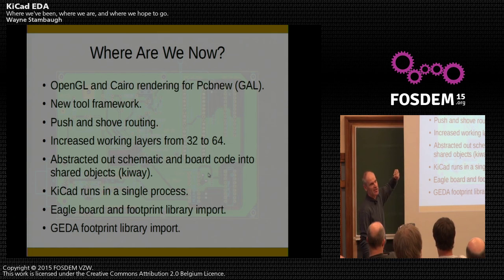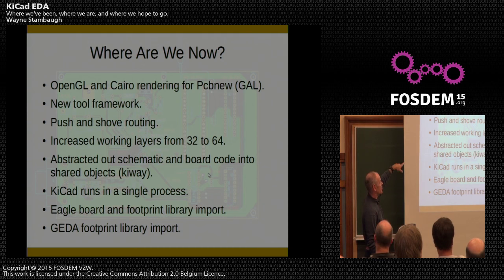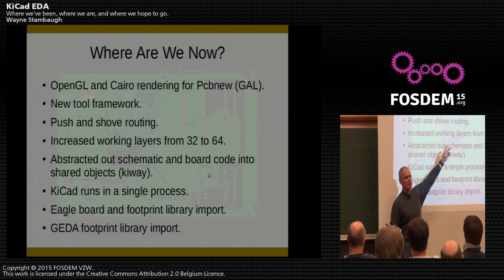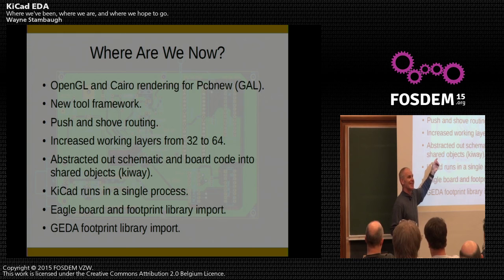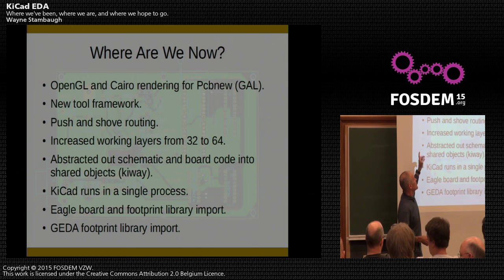We now have OpenGL and Cairo rendering in PCBnew — it has not been ported over to the schematic editor yet. The new tool framework makes it a lot easier to add more complicated and interesting tools to both the schematic and board editor. Push-shove routing is in, which Tom will talk about. We also upped the layer count — originally it was 32 layers: 16 copper and 16 other. Some of the other layers were predefined and you couldn't define them the way you wanted. We've now upped that to 64.